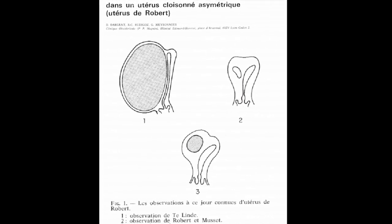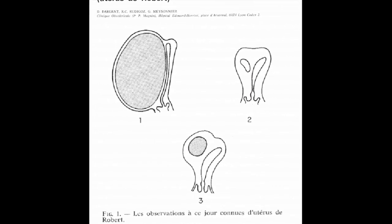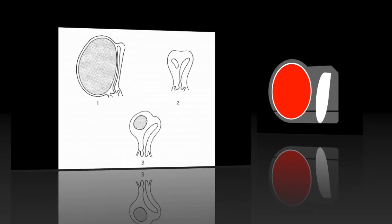Ten years after the first description, three different types of Robert's Uteri have been described: Type 1 with a large hematometra, Type 2 without a hematometra, and Type 3 with a small hematometra in a blind cavity.